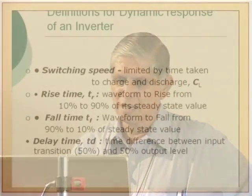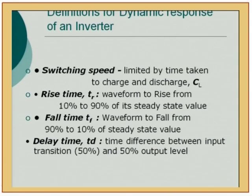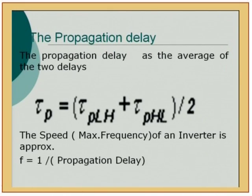Switching speed is limited by the time taken to charge and discharge capacitances. Rise time is measured from 10% to 90% of steady-state value; fall time from 90% to 10%. Propagation delay is the time difference between input transition and 50% of output transition. The propagation delay is the average of low-to-high and high-to-low delays. T_PLH differs from T_PHL depending on the relative sizes of P-channel and N-channel transistors. The reciprocal of delay is the speed.